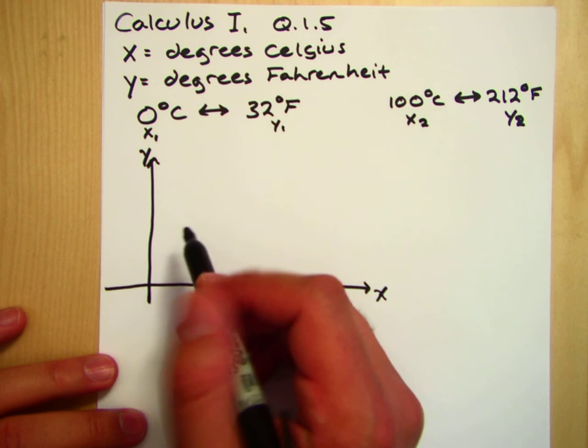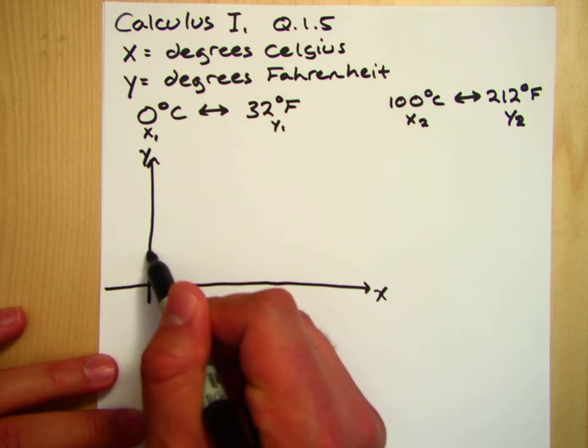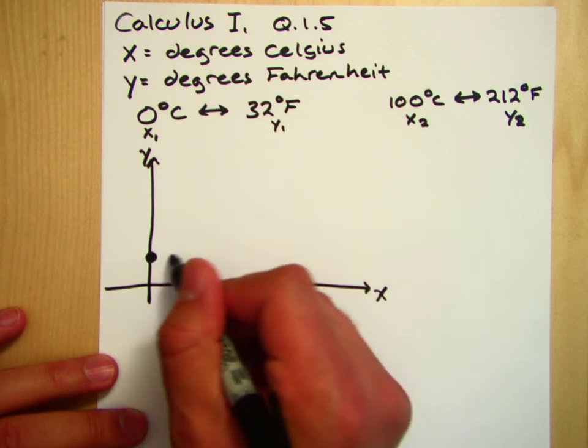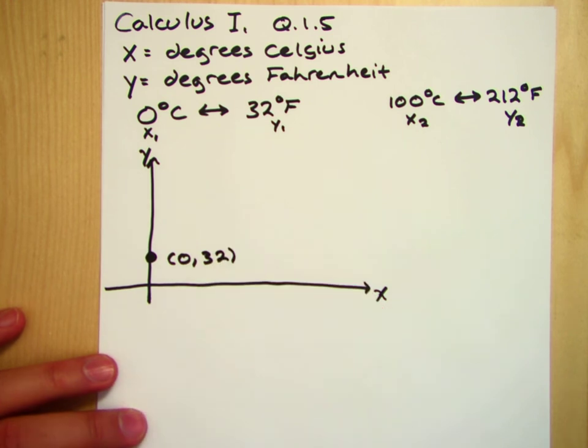Zero degrees Celsius corresponds to 32 degrees Fahrenheit.